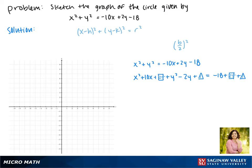So now we can rewrite our equation. The x's can be rewritten as x plus 5 squared. The y's can be rewritten as y minus 1 squared. And then on the right we get 8.